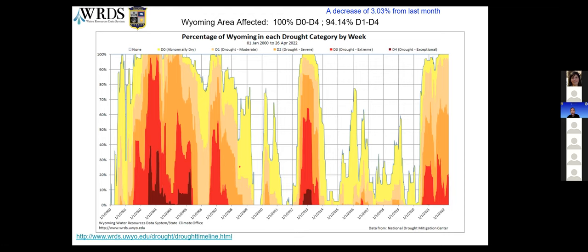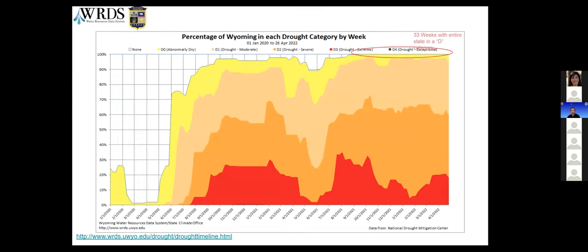The area of the state in D1 to D4 actually decreased by about 3% in the last month thanks largely to these recent snows. Zooming in on conditions from the start of 2020 to present, Wyoming covers a lot of ground so conditions in one county can be quite different from another. Individual county timelines are available at the link at the bottom of the slide. We've had 33 weeks now where the entire state has been in one of these D categories — not necessarily drought, but including D0 which is abnormally dry.